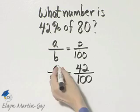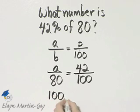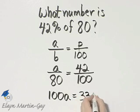And let's solve by cross products. A times 100, that is 100A, is equal to 42 times 80, that will be 3360.